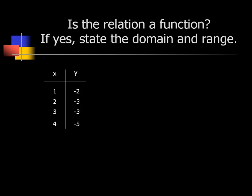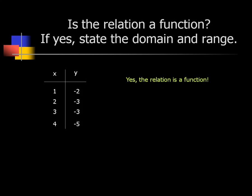Now, is this relation a function? Does each x-value go to only one y-value? Does 1 go to only one y-value? Yes, negative 2. Does 2 go to only one y-value? Yes. Does 3 go to only one y-value? Yes — it happens to be the same y-value as 2, but that's okay. So yes, this is a function. State the domain and range: the domain is 1, 2, 3, 4 and the range is negative 2, negative 3, negative 3, negative 5.